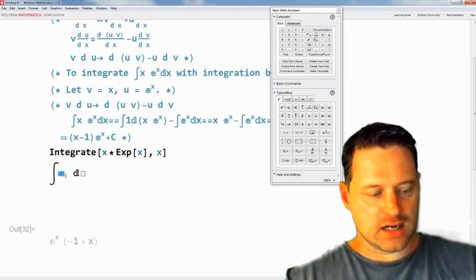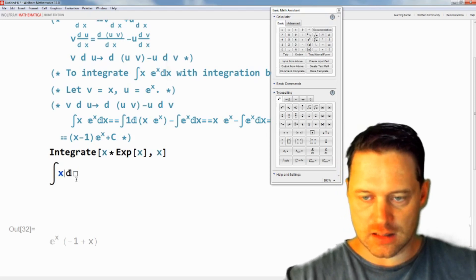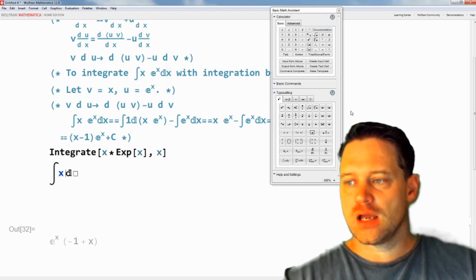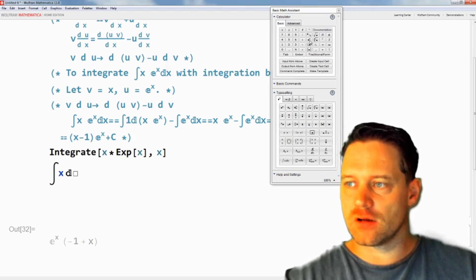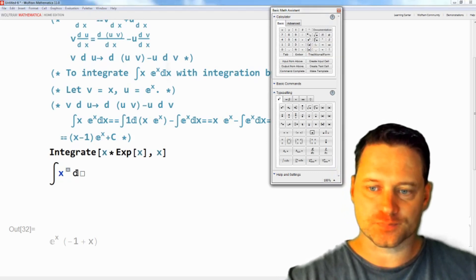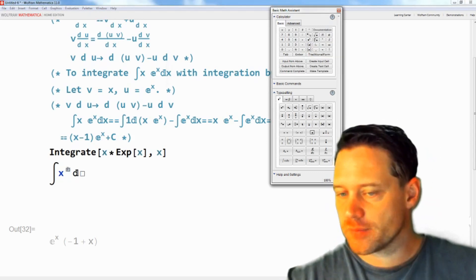Then I can enter here in the empty box, x, and then I'll put space. Then I should have a button up here for e. But first of all, I'll press the power button. Well, that takes x to the power of something, but I want e to the power of x.